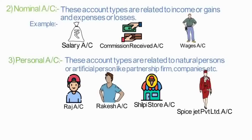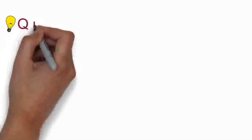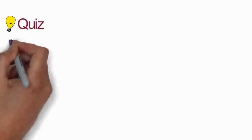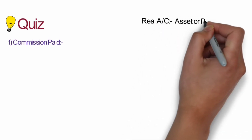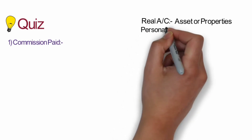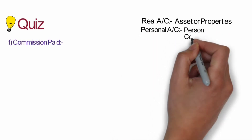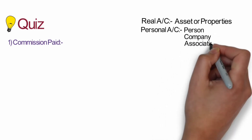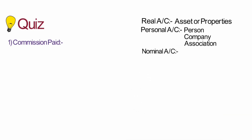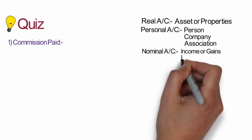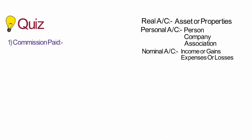Hope you have understood all three types of accounts. Now let's have a quiz — you will tell me whether the account is a real account, personal account, or nominal account. Commission paid — which type of account is it? Let's revise: real account deals with assets or properties; personal account deals with the name of a person, company, or association of persons; and nominal account deals with income or gains and expenses or losses.